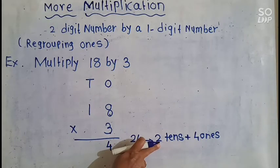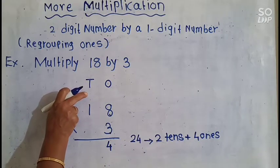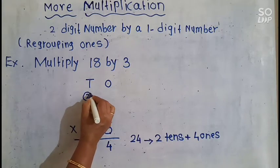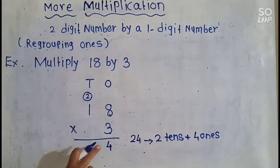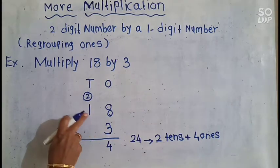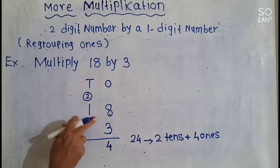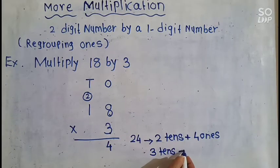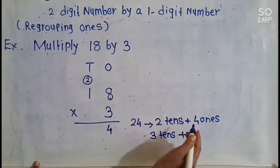And then these 2 tens we have to carry over here in the 10s column. We will write these 2 tens in the 10s column. Now, multiplication with the 10s place: 3 × 1 are 3, meaning 3 tens. We have to add these 2 tens to the 3 tens.